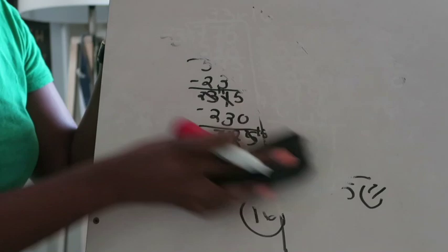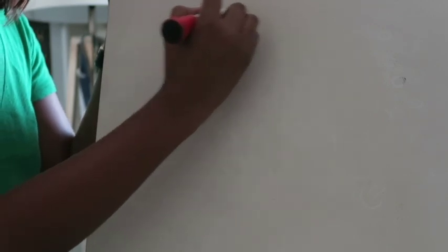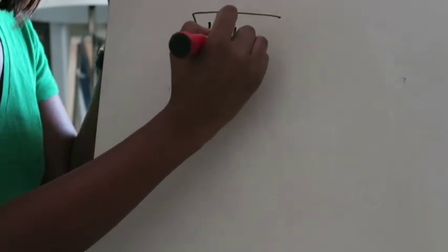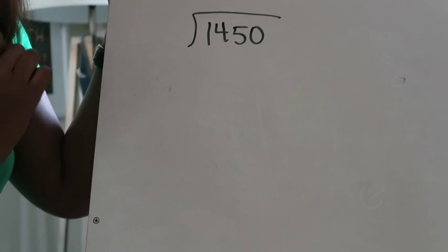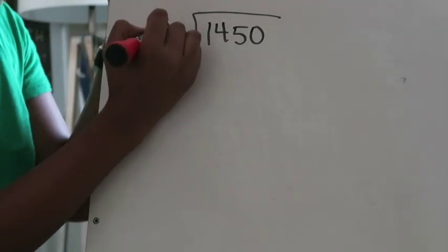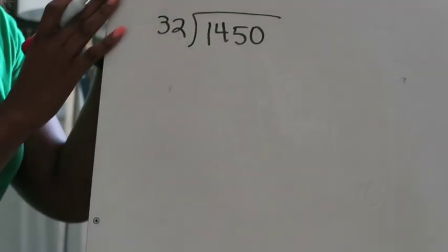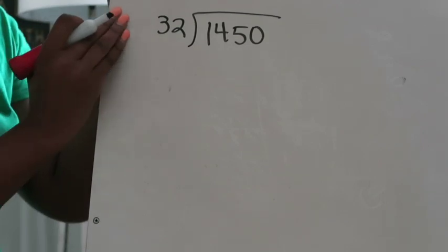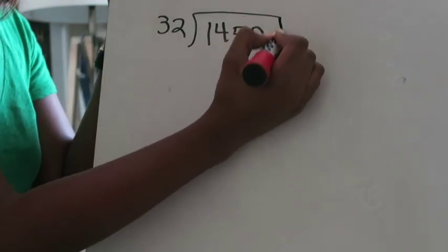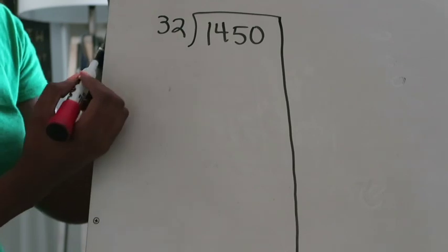Let's do one more example with partial quotients and then we'll wrap it up. On this problem we're going to deal with a bigger number. We're going to take 1450 and divide that by 32. We're not going to do our silly saying because we're working with partial quotients but we are going to create a workspace for ourselves by drawing that line.